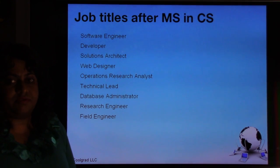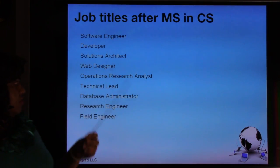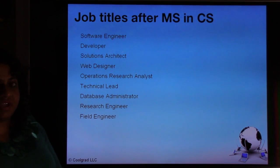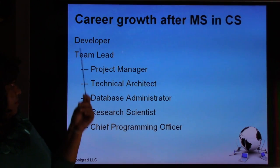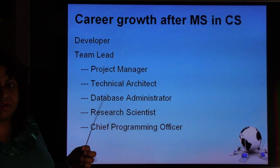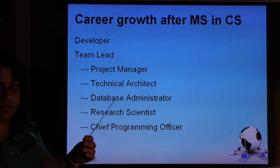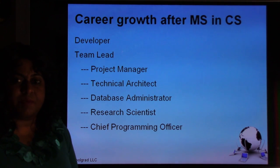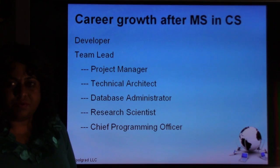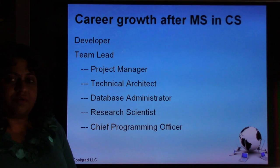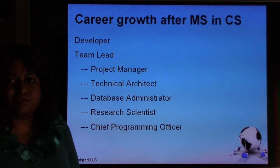After an MS in Computer Science, career options include software engineer, developer, solutions architect, web designer, operations research analyst, technical lead, database administrator, research engineer, or field engineer. Later you can scale up to team lead, then split into management or become a technical architect. Some people become database administrators, researchers, or even Chief Programming Officer — a title created by companies like Microsoft for people who have a passion for programming and want to scale up in the hierarchy without moving into management.